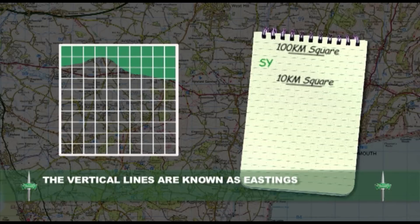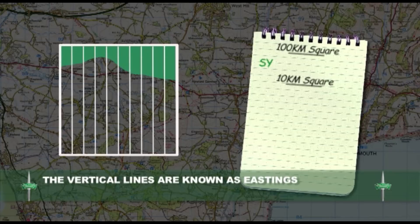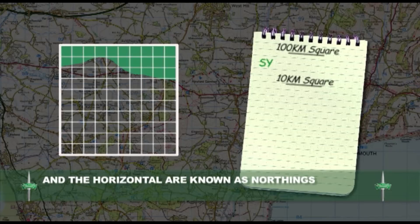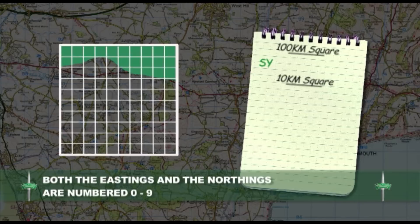The vertical lines are known as Eastings, and the horizontal lines, Northings. Both the Eastings and the Northings within a grid are numbered 0 to 9.